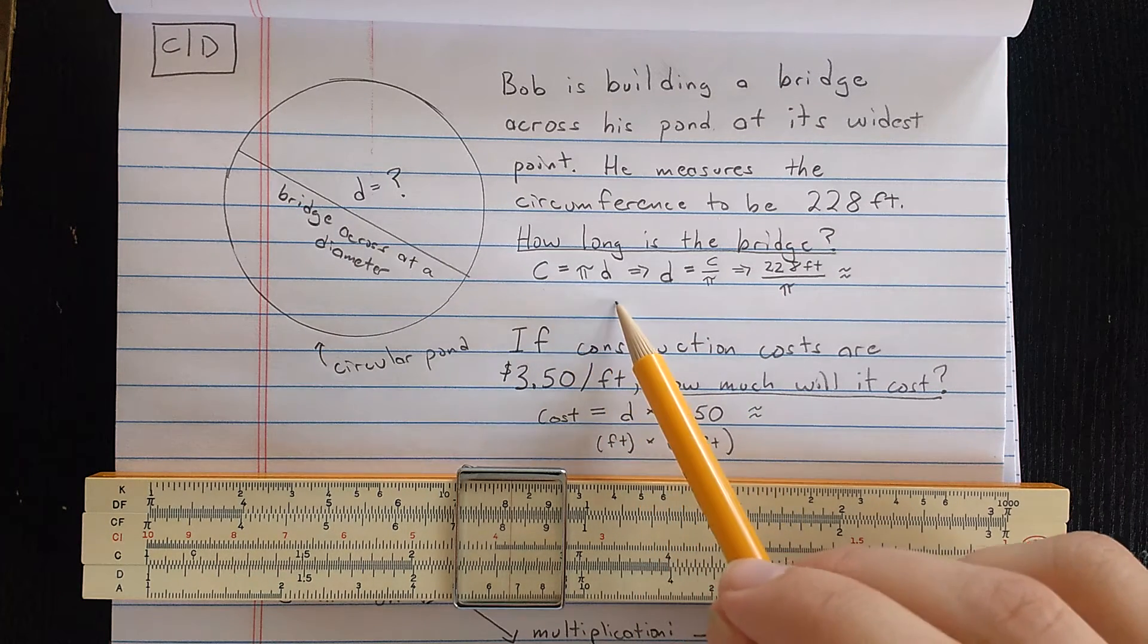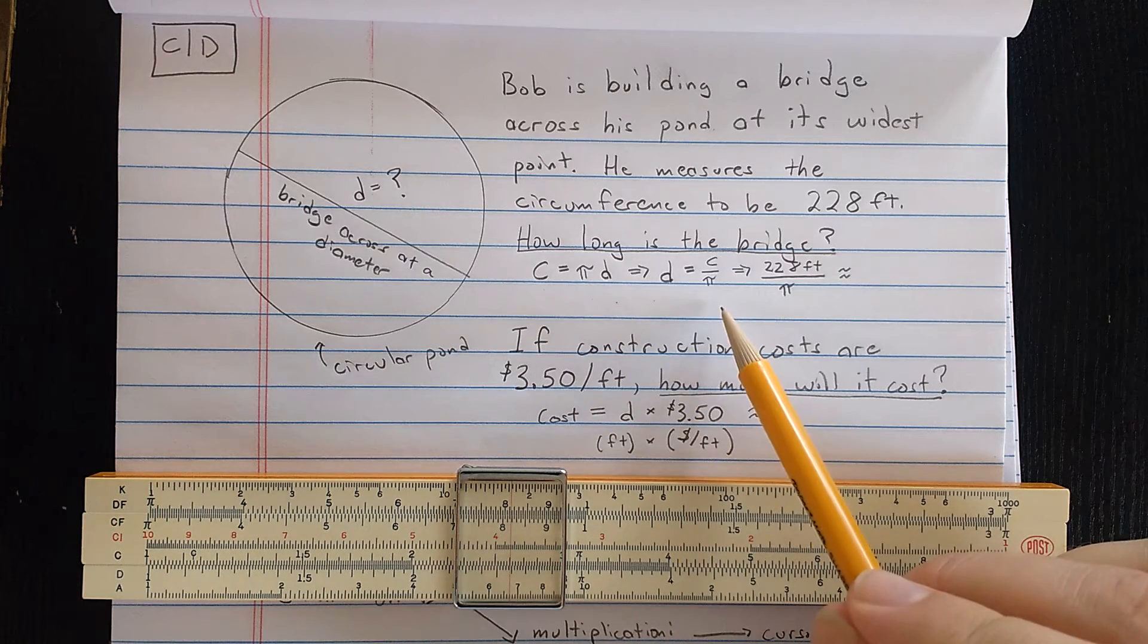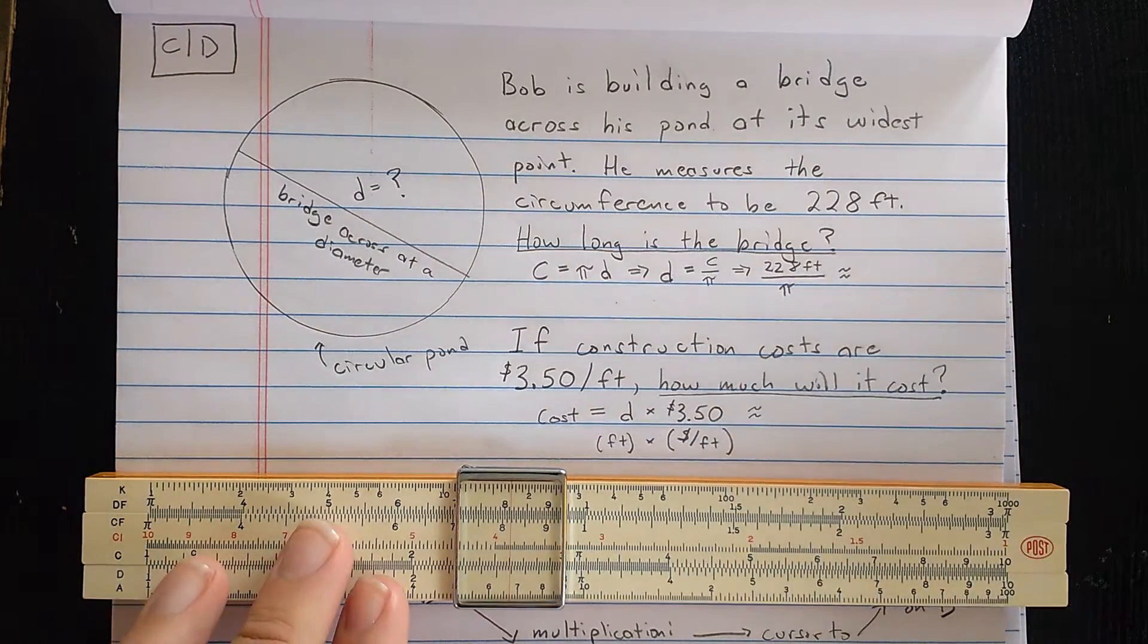We know circumference is pi times diameter. So diameter is circumference divided by pi. What I need to compute on the slide rule is 228 divided by pi.